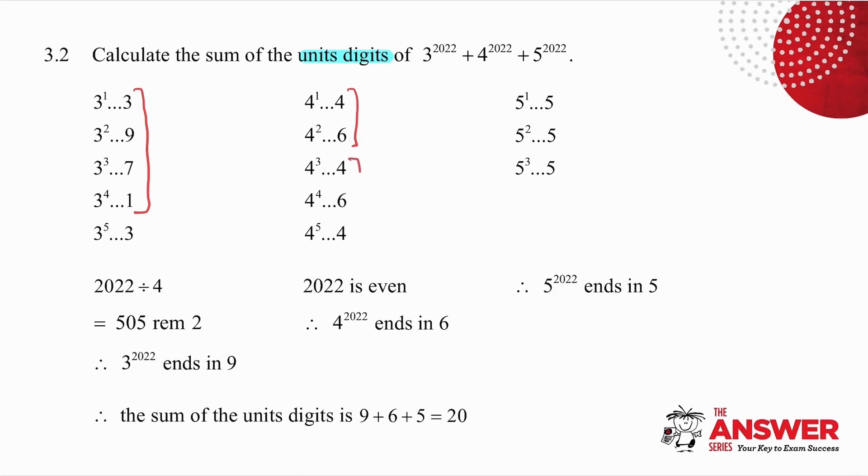It ends in either a 4 or a 6. If my power is odd, my number ends in 4. If my power is even, my number ends in 6. Because 2022 is even, it means that 4^2022 ends in 6.